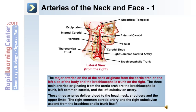The major arteries of the neck originate from the aortic arch on the left side of the body and the brachiocephalic trunk on the right. The three main arteries originating from the aortic arch are the brachiocephalic trunk, the left common carotid artery, and the left subclavian artery. These three arteries deliver blood to the head, neck, shoulders, and upper limbs. The right common carotid artery and the right subclavian ascend from the brachiocephalic trunk itself.